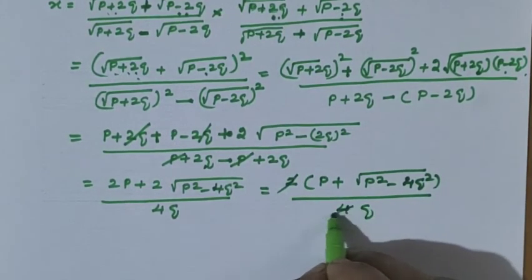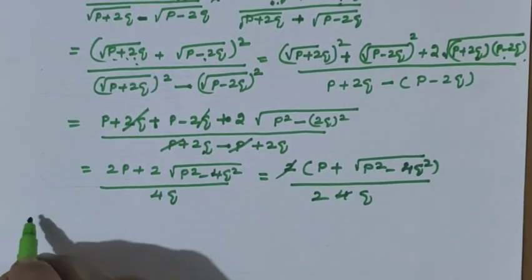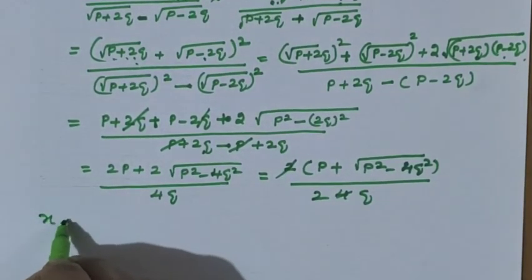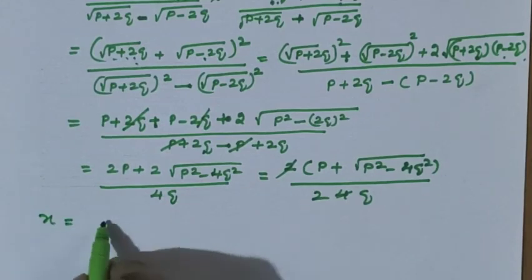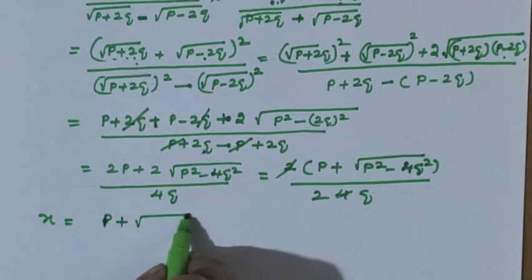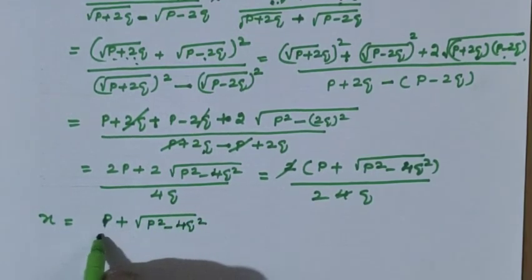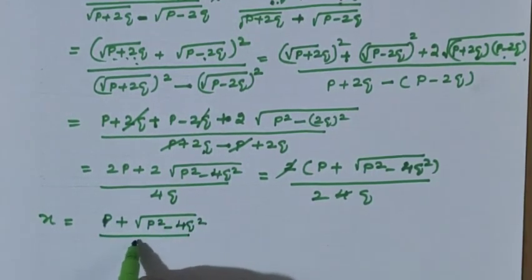2 and 4 will cancel. So x equals p plus root of p squared minus 4q squared, whole divided by 2q.